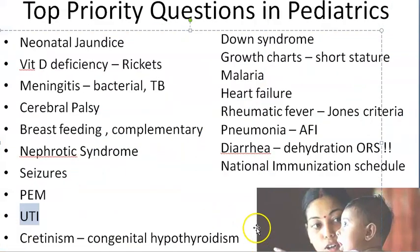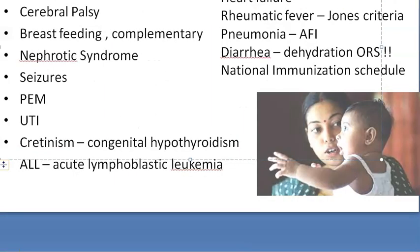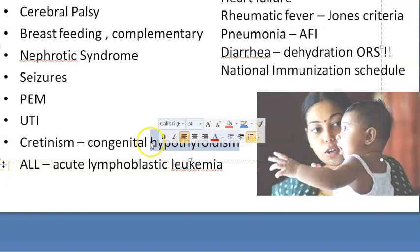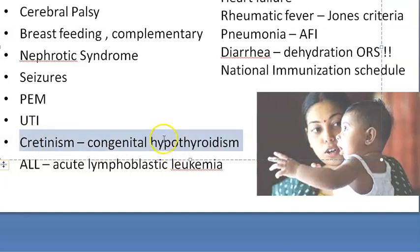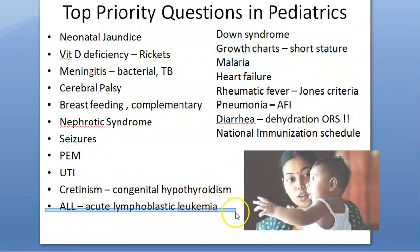Protein energy malnutrition: know about marasmus and kwashiorkor and their differences. UTI is very important because any UTI in a child can indicate a congenital anomaly such as vesicoureteric reflux. Cretinism — congenital hypothyroidism — is very, very important. The sooner you detect hypothyroidism in a baby, the better, because just giving thyroid hormone can allow the baby to escape retardation.